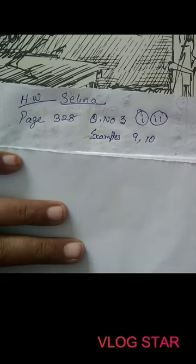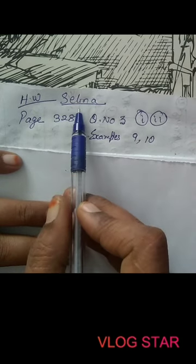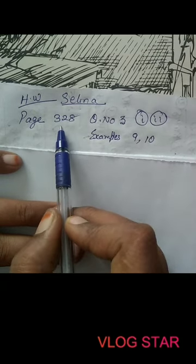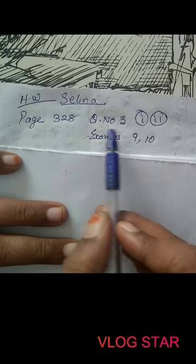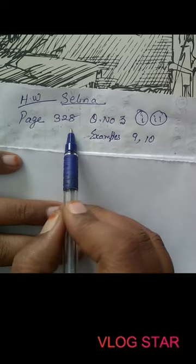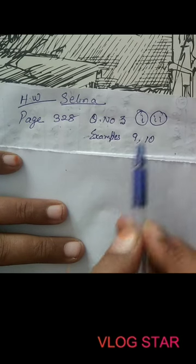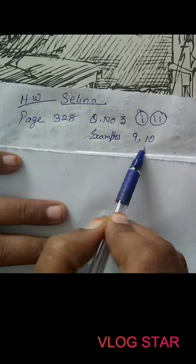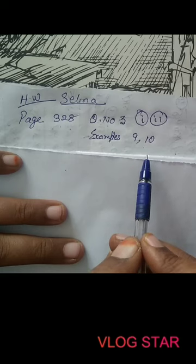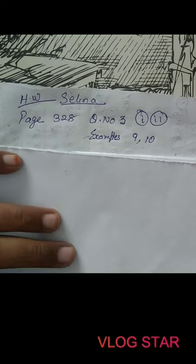We have proved several identities using complementary angle formulas. For practice, redo all the sums in your assignment notebook and do exercises from the Selina textbook, page 328, question number 3, both subdivisions, and examples 9 and 10 on the same page. Tomorrow's class will cover more complementary angle sums to complete the topic.